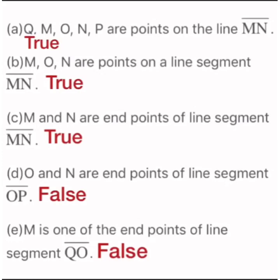Statement 3: M and N are end points of line segment MN — TRUE, because line segment MN has end points M and N. Statement 4: O and N are end points of line segment OP — FALSE, because line segment OP has end points O and P, not O and N.